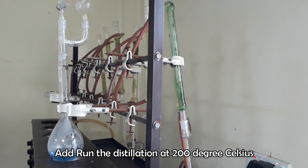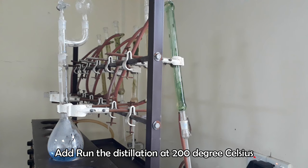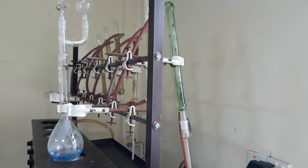Run the distillation unit and heat at 150 to 200 degrees Celsius. Don't forget to turn on the water circulation pump of the condenser.